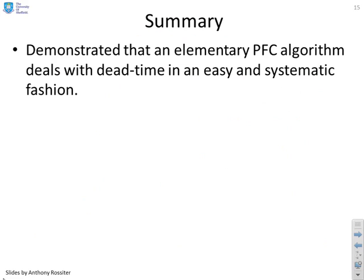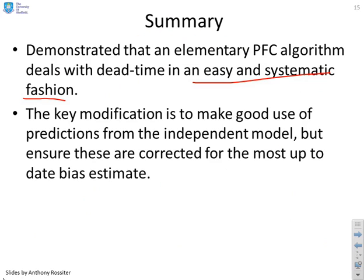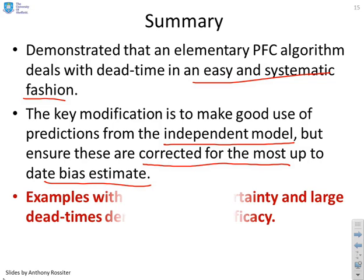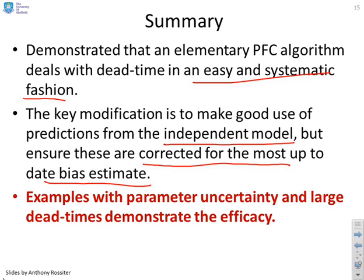So we've demonstrated that an elementary PFC algorithm deals with dead time in an easy and systematic fashion. The key modification is to make good use of predictions from the independent model but ensure these are corrected for the most up-to-date bias estimate. So in essence we control the model, use PFC to control the model, but we make sure that the predictions of the model are corrected by this bias term. We've given some examples with parameter uncertainty and large dead times and demonstrated it works well despite it being very simple.